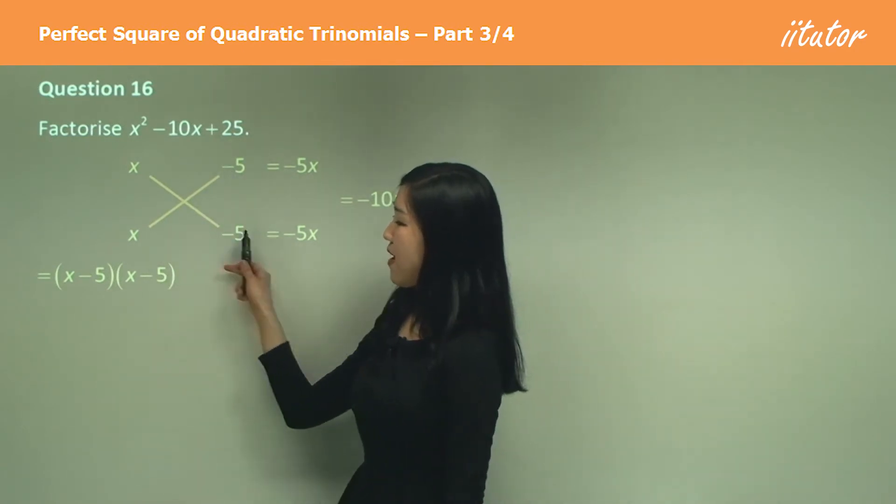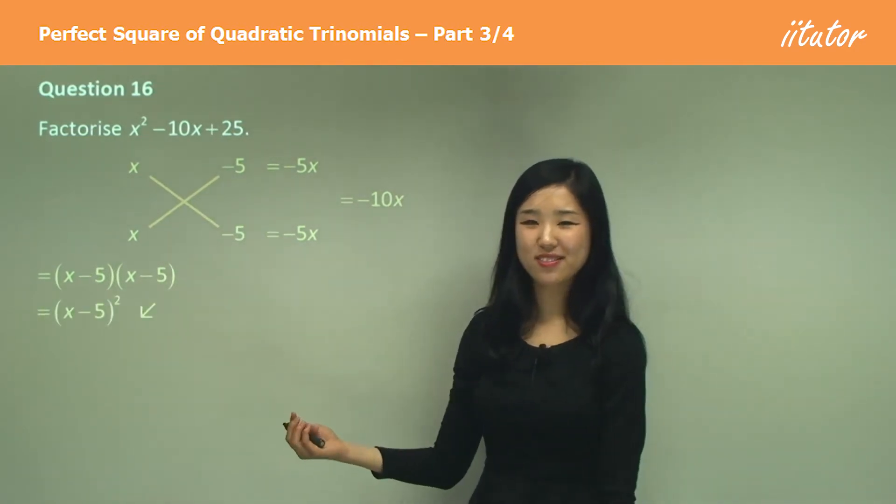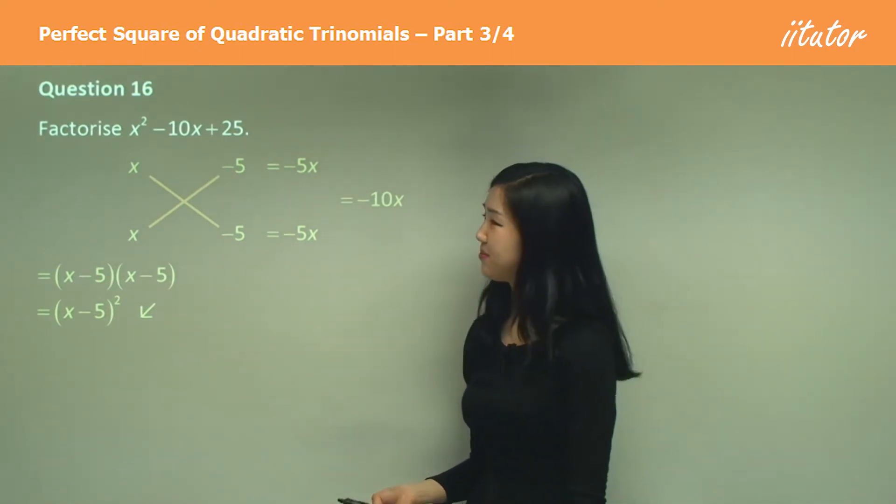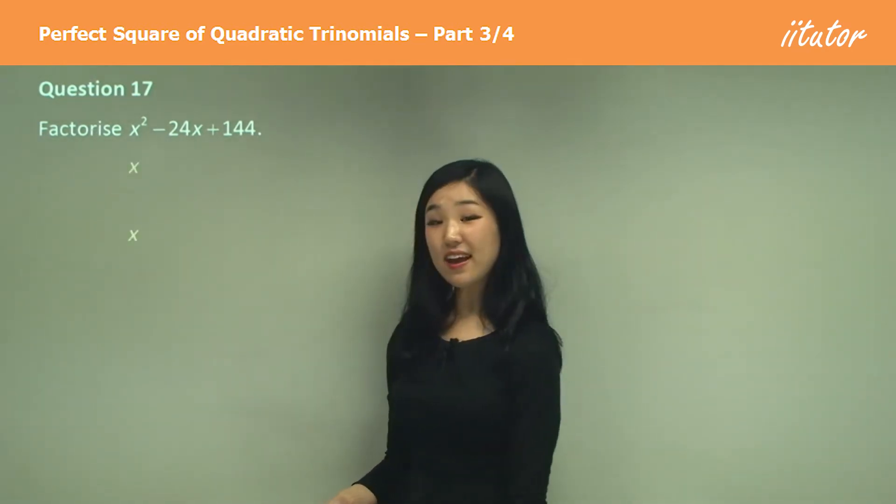So it's going to be x minus 5, x minus 5, which is x minus 5 squared. That's the perfect square. Usually perfect squares I think are a little bit more easier. Question 17. Again, x and x.